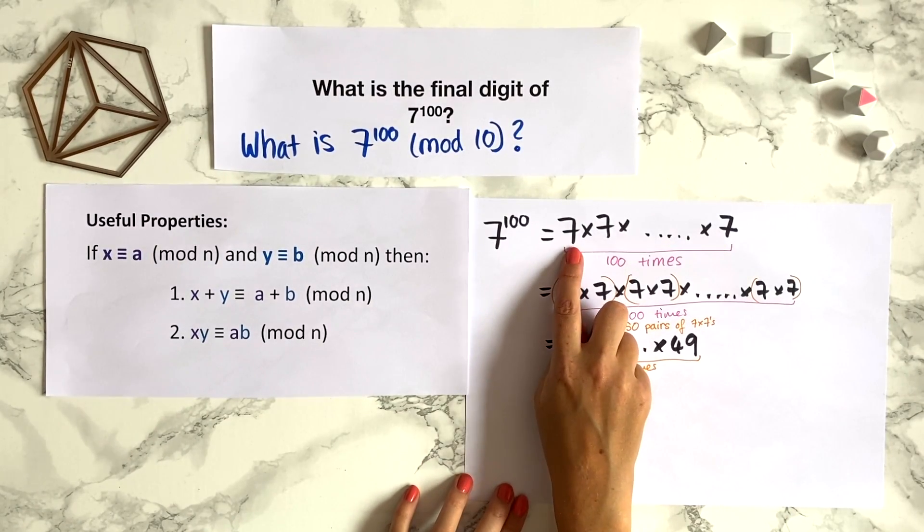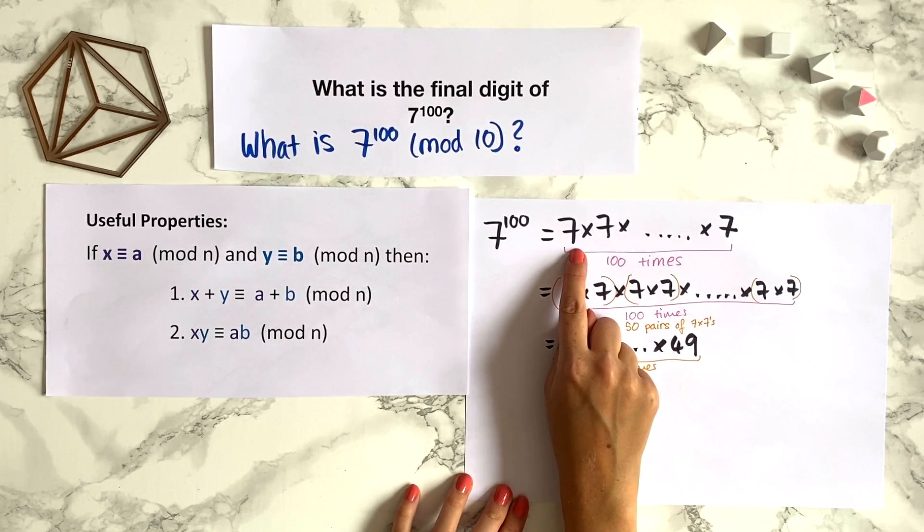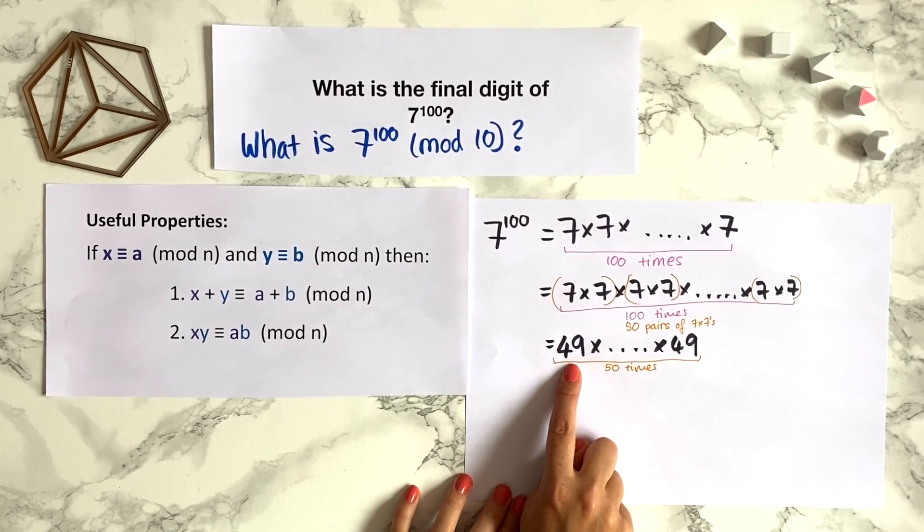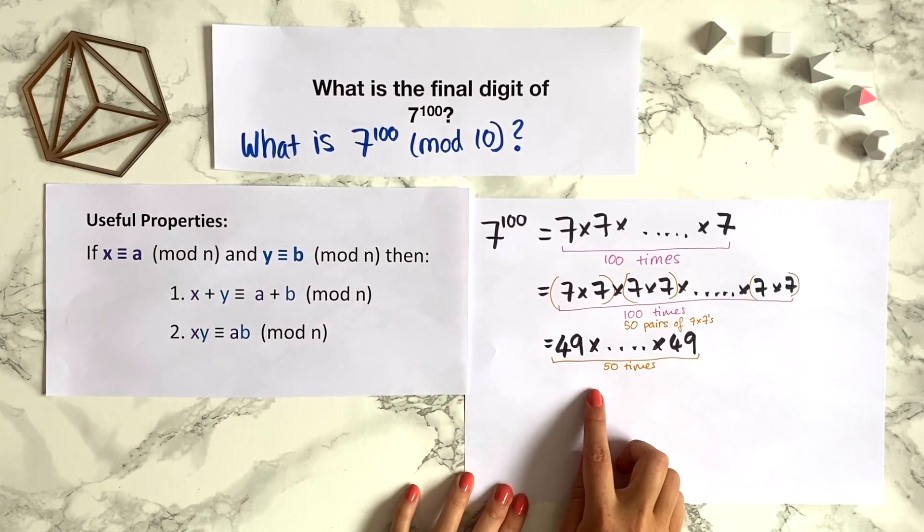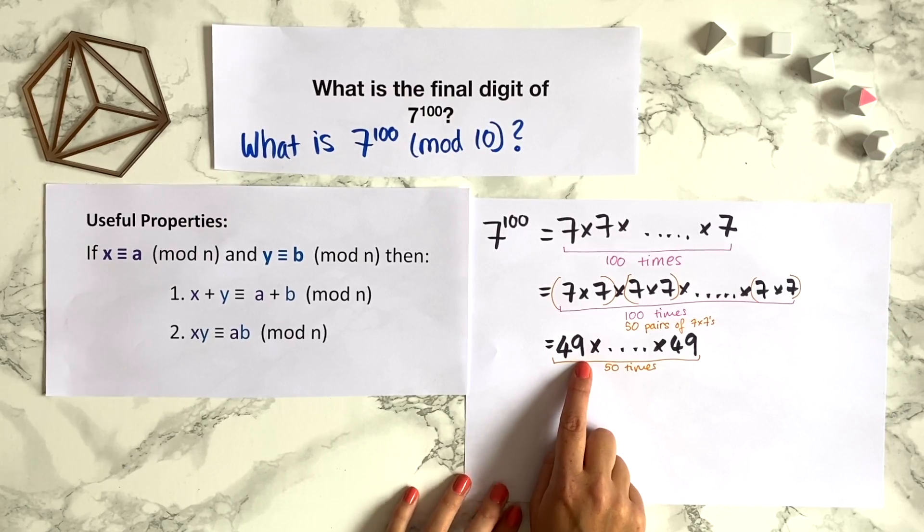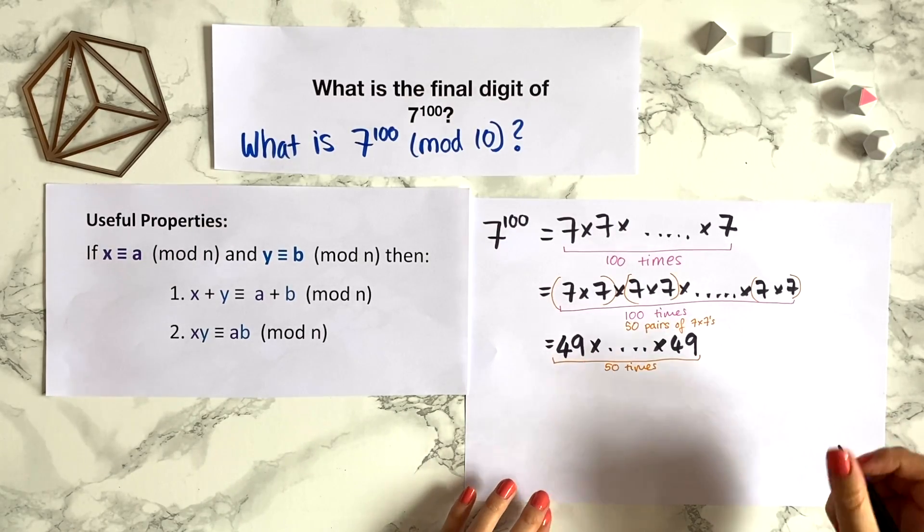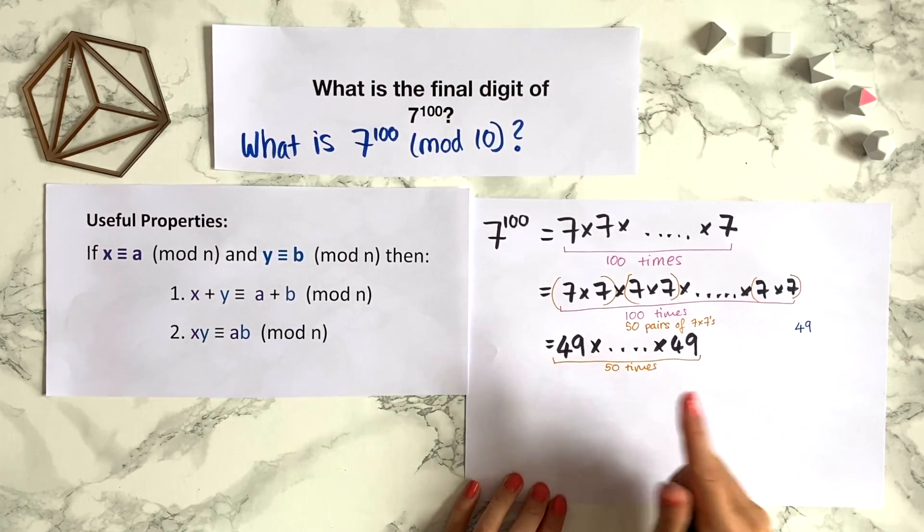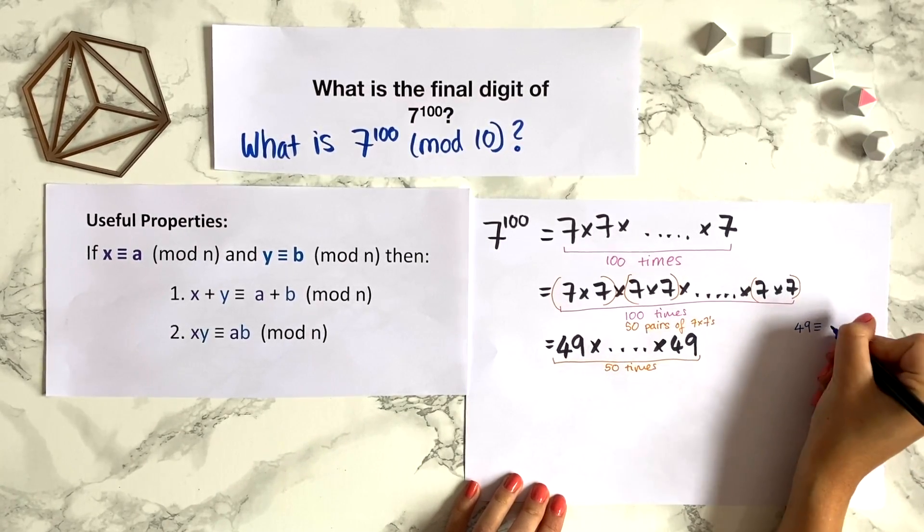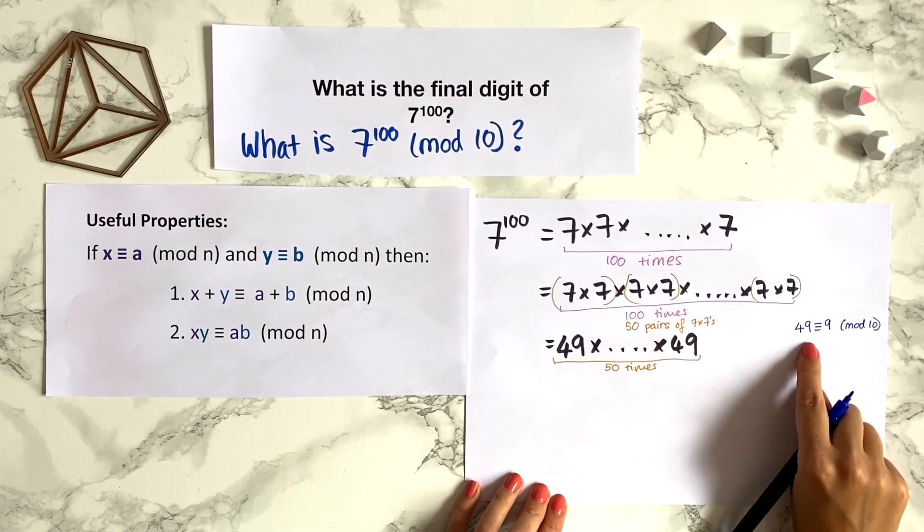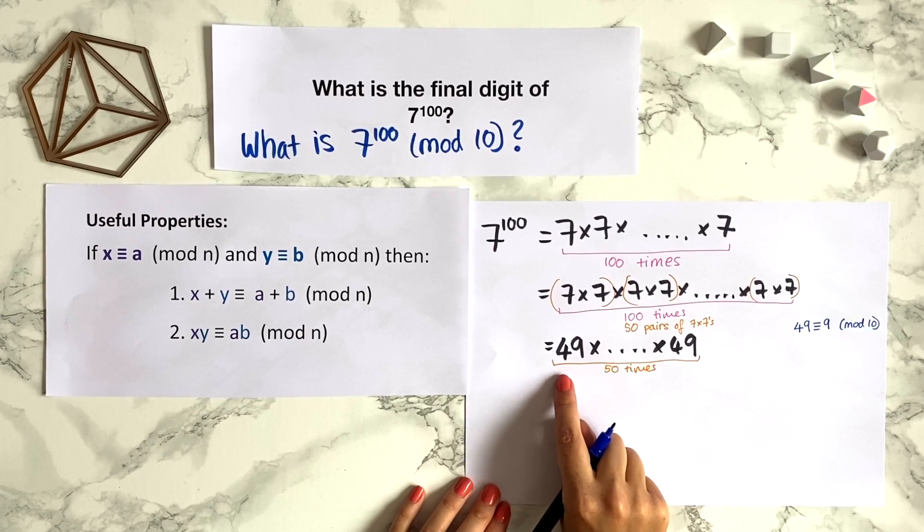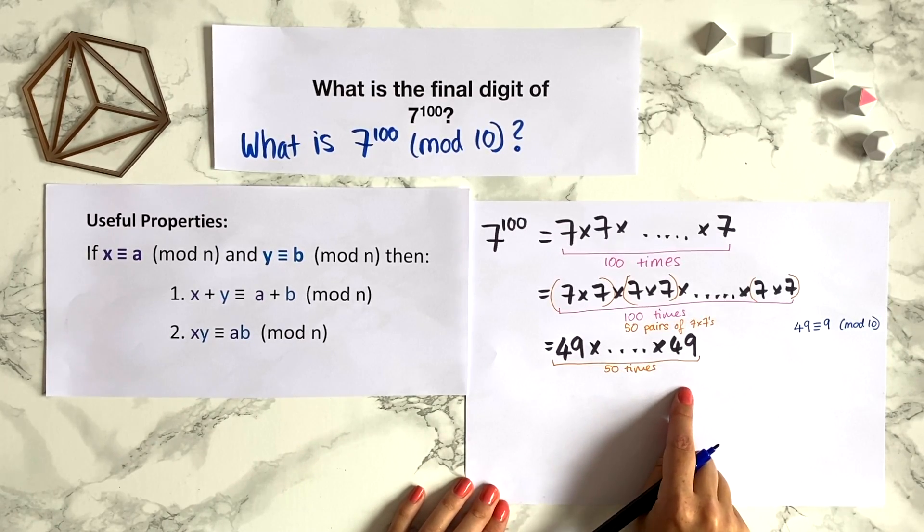So we couldn't reduce the 7s modulo 10 before because 7 was already reduced as much as possible, so this theorem didn't really help us. But now we've got 49s so we can use this theorem because we can reduce 49 modulo 10. Let me write this on the side: 49, well modulo 10, 49 is congruent to 9. Remember mod 10 really just takes the final digit of a number. So we could rewrite this as 9 times 9 times 9 and so on 50 times.